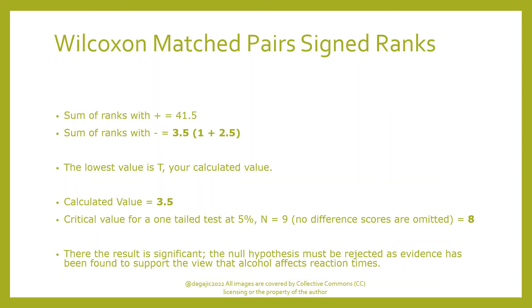We add up the sum of the ranks with positive signs and the sum of the ranks with negative signs. The sum of the ranks with negative signs was 1 and 2.5, making a total of 3.5. The lowest value is T, and we can see quite clearly that the minus ranks give the lowest sum. Our calculated value in this test is 3.5.